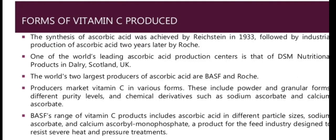The synthesis chain is followed by industrial production of ascorbic acid, with Roche industrializing it two years later. The world's two largest producers of ascorbic acid are BASF and Roche. Vitamin C is a strong antioxidant. It is available in powder and granular form with different purity levels checked before market supply. BASF's range differs in particle size or salt form. Some major specialty vitamin C products include Stayc, a low-solubility product made by Roche.